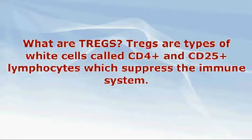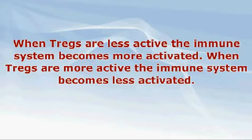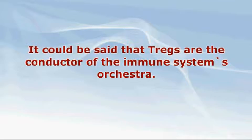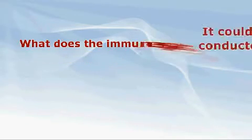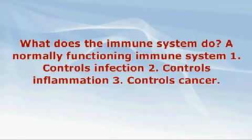The TREG cells involved include lymphocytes known as CD4-plus and CD25-plus lymphocytes. When TREGS are less active, the immune system becomes more activated; when TREGS are more active, the immune system becomes less activated. TREGS either enhance or suppress immune system activity. It could be said that TREGS are the conductor of the immune system's orchestra.